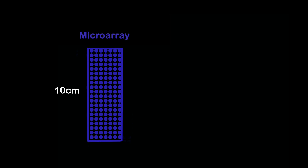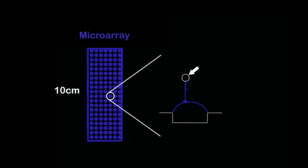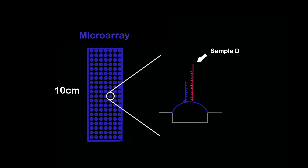Genotyping works very differently. Instead of sequencing the DNA base by base to discover the sequence, genotyping starts with a device called a microarray. A microarray is about 10 centimeters long and has thousands of tiny wells. Each well has a bead in it, and stuck on the surface of the beads are many copies of the same DNA sequence. This sequence stops one base before the base of interest. The sample DNA is then broken into small pieces and washed over the array, where it sticks to the complementary sequence on the bead.